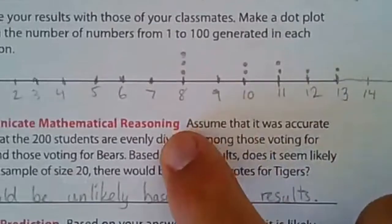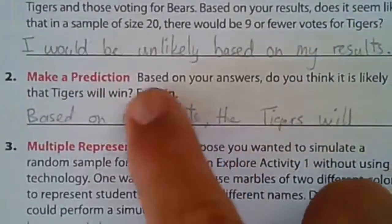Nine or fewer right here, we can see that it only happened three times out of the total 10, so that seems unlikely that it would be nine or fewer votes.